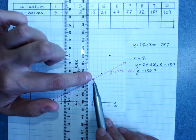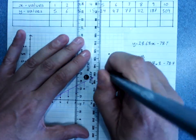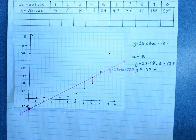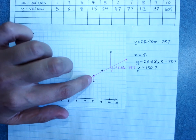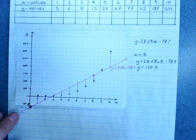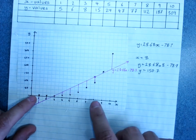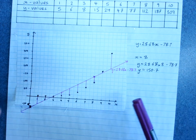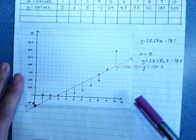Basically, the point on the line is where the line predicted y would be when x was 8; the actual data point is where it really was. The residuals are like the error — how far off our prediction was. The reason a least squares line is called that is that if we measure each residual, square them, and add them up, the line we want has the lowest possible sum of those squared residuals. That means it's the best fit to our data — hence 'least squares.'